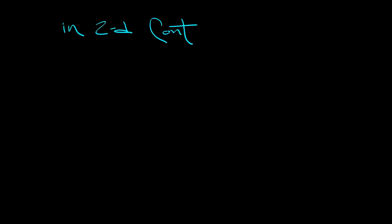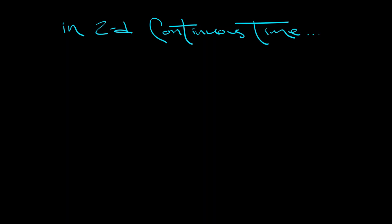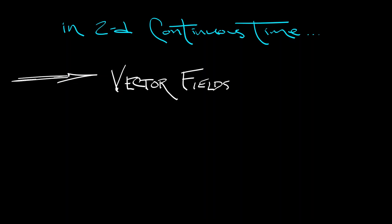Continuous time systems in 2D are perfect — they are so well suited to illustration and animation. Let's talk about how to visualize those. In 2D continuous time, there are basically two approaches for visualizing dynamics. A dynamical system tells you how X is changing over time and how Y is changing over time. That infinitesimal rate of change can be encoded as a vector, and what that gives you is a vector field — a two-dimensional vector field.